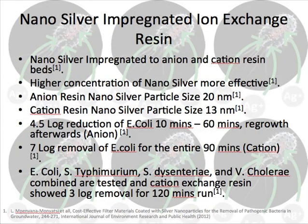For ion exchange resin beds, similarly, higher concentration of nanosilver should be more effective. Nanosilver particle size in anion resin is measured at 20 nanometers and 13 nanometers in cation resin. Anion resin nanosilver showed 4.5 log removal of E. coli starting from the 10-minute run and lasting for 60 minutes, with regrowth seen afterwards. For cation exchange resin, 7 log removal of E. coli is indicated for the entire 90-minute run.